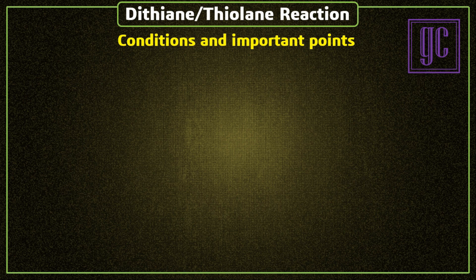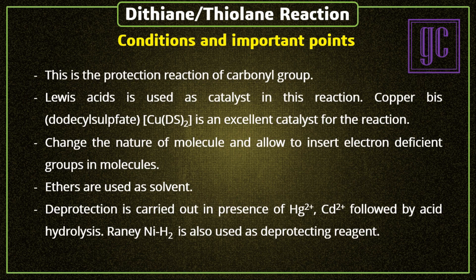The conditions and important points of the reaction: this is a protection reaction of carbonyl groups. Lewis acid is used as catalyst. Copper-based or decyl sulfate is an excellent catalyst for the reaction. This reaction changes the nature of the molecule and allows insertion of electron-deficient groups. Ethers are used as solvent. De-protection is carried out in the presence of mercury(2+) or cadmium(2+), followed by acid hydrolysis. Raney nickel with hydrogen gas is also used as a de-protecting reagent.